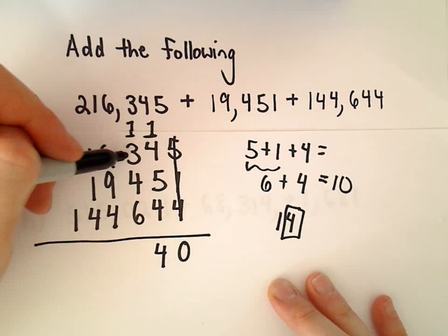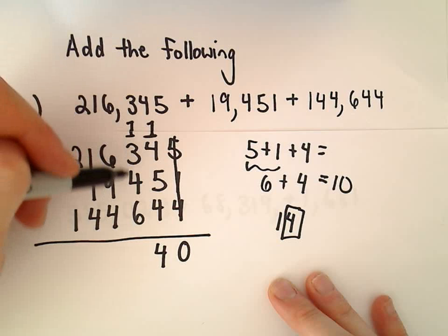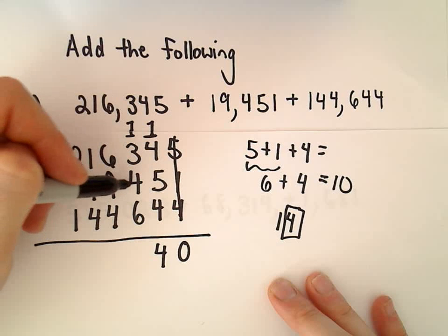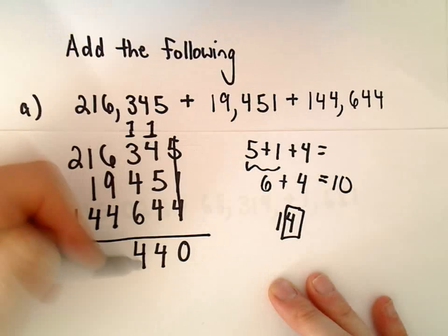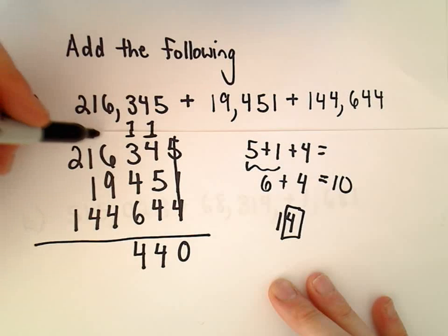So let's see, 1 plus 3 is 4, 4 plus 4 is 8, 8 plus 6 is going to give us 14. So again I'm going to drop the 4 down and carry the 1.